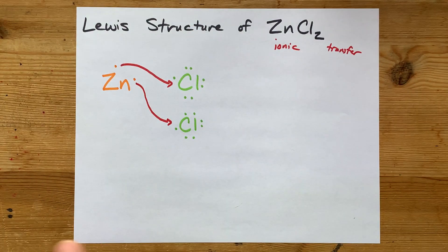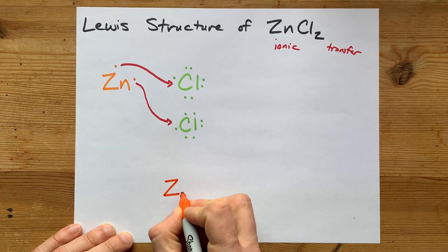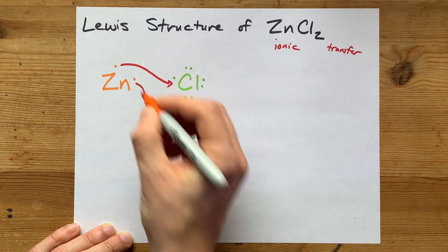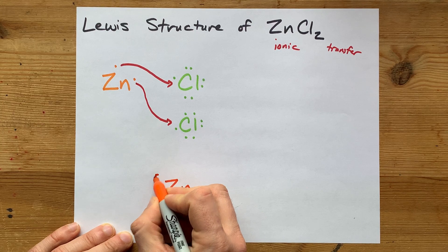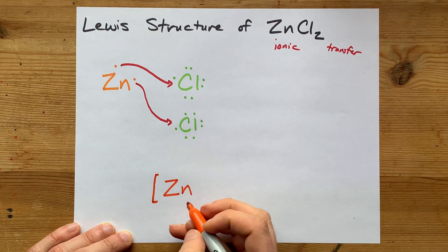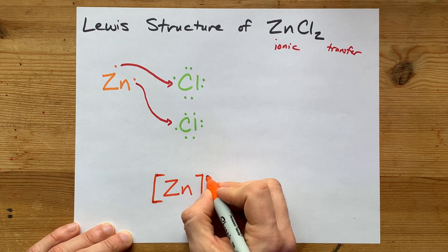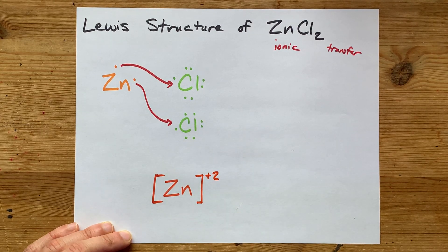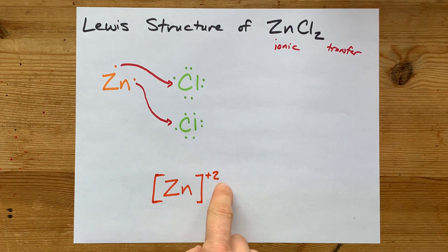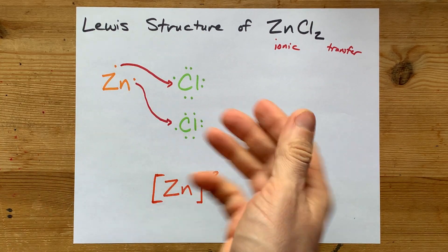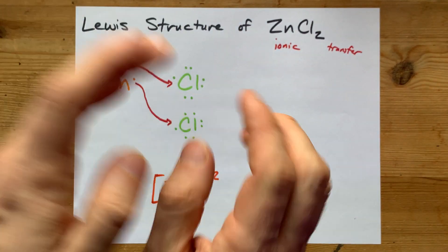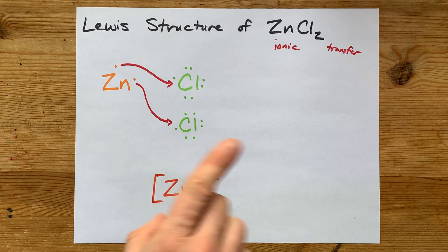Now to finish off the Lewis structure, write the zinc in the center with no electrons around it. It gave away its electrons after all. It's now an ion, so it gets square brackets with plus two as the charge. It gave away two negatively charged electrons—it lost negatives, which made it positive.